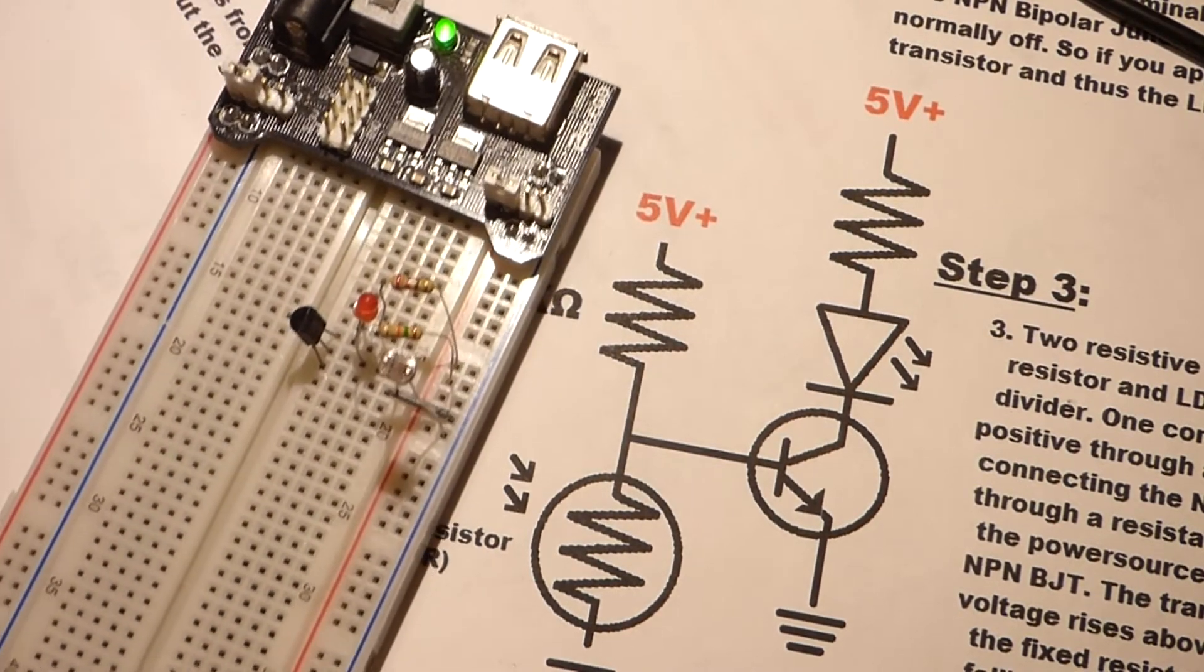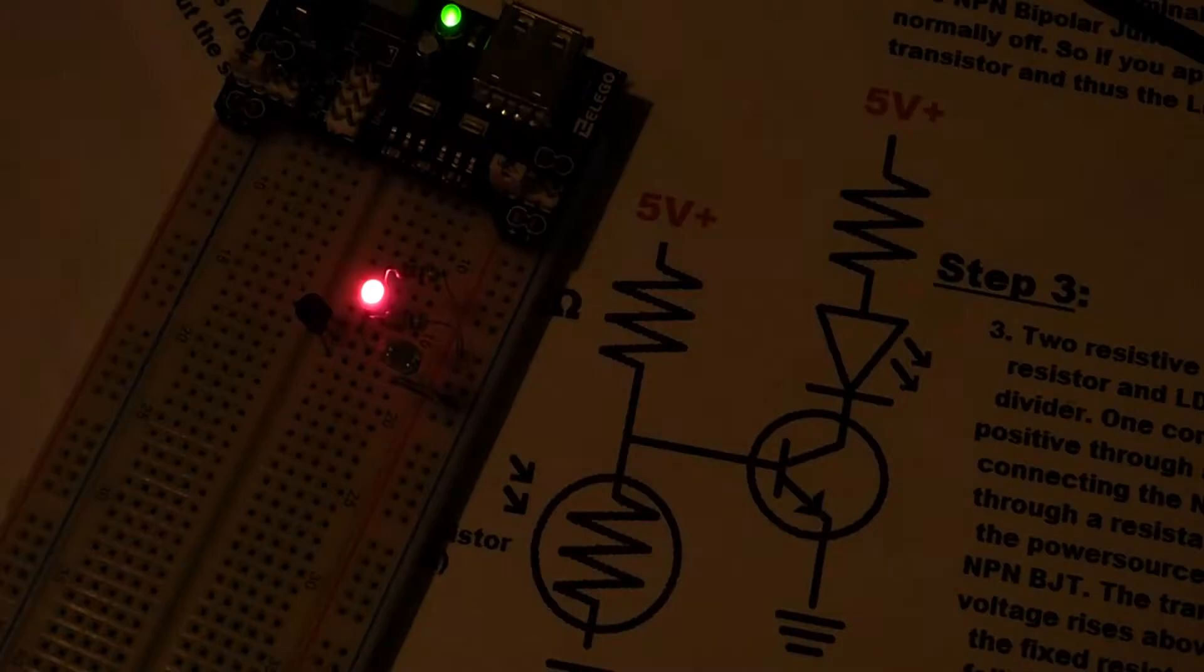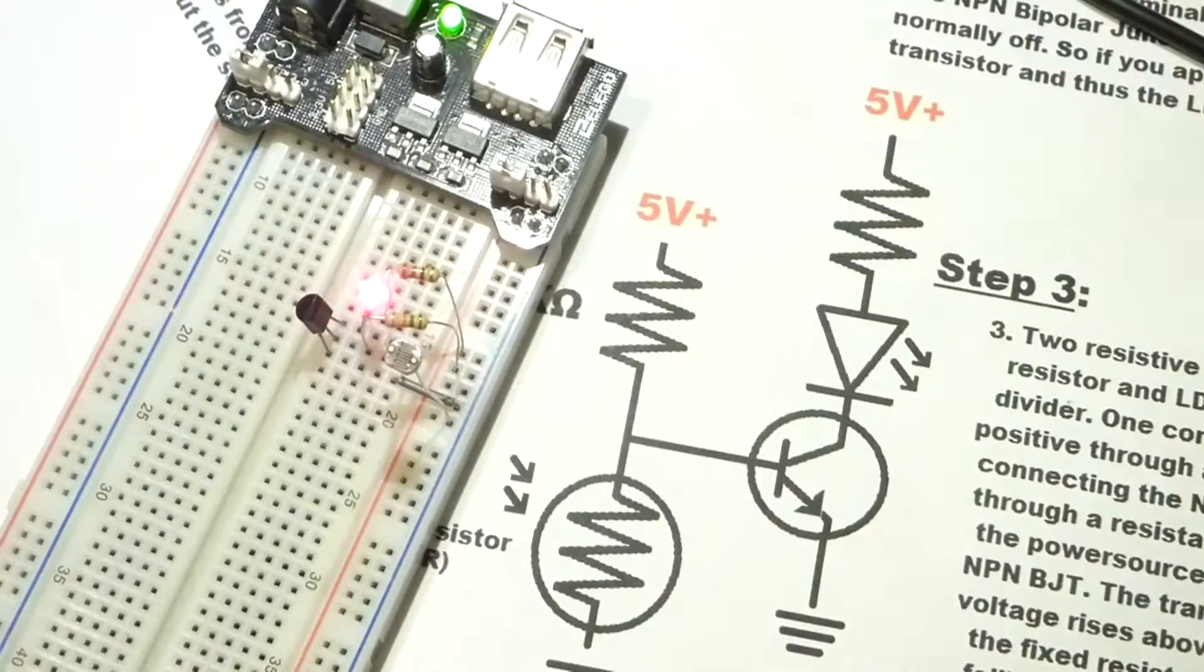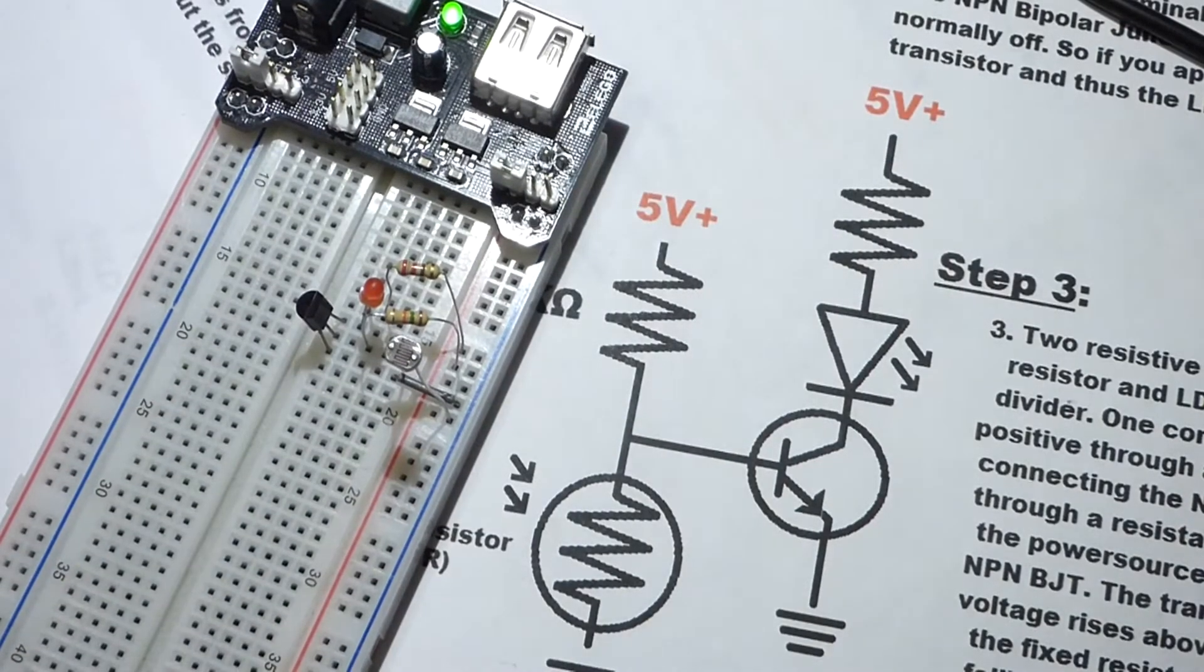And now we have our voltage divider. So I turn the power on. The LED is off because I have the lamp at the brightest setting, but as soon as I turn the lamp off, the LED comes on. And of course, we have to get to the middle setting, the second brightest setting, for it to turn on.